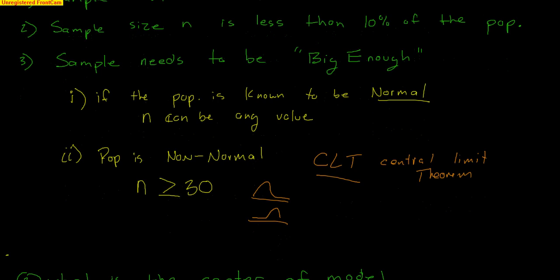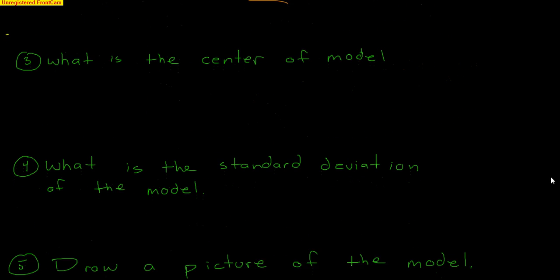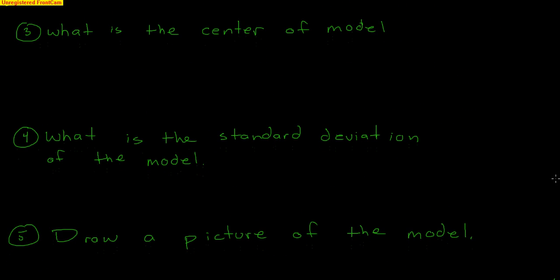So basically, the sampling distribution will still be normal. What is the center of the model? We expect the center of our sampling distribution to be the truth — the population mean.